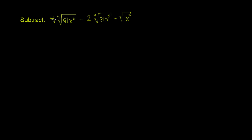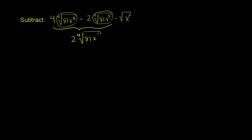You can just say: I have 4 of something — I'll circle it in yellow — I have 4 of this, it could be lemons. I have 4 of these things and I want to subtract 2 of these things. These are the exact same things — they're the fourth root of 81x to the fifth. So if I have 4 lemons and I take away 2 lemons, I'm going to have 2 lemons left over. So these terms simplify to 2 times the fourth root of 81x to the fifth. I got this 2 just by subtracting the coefficients: 4 of something minus 2 of something is 2 of that something.